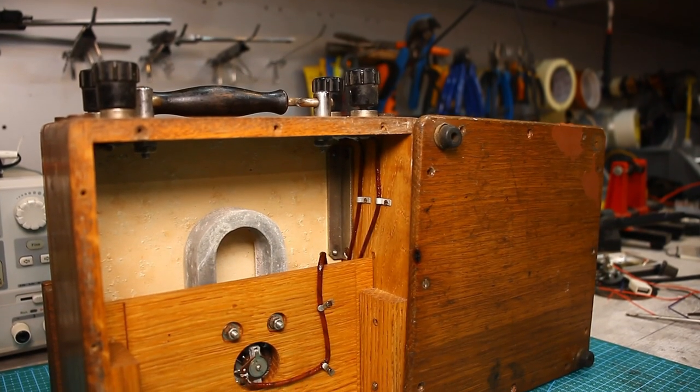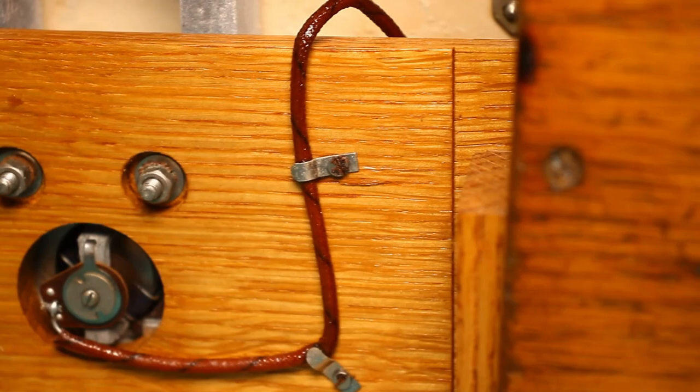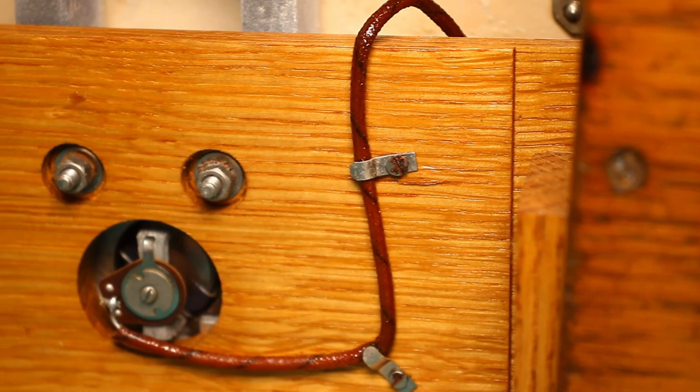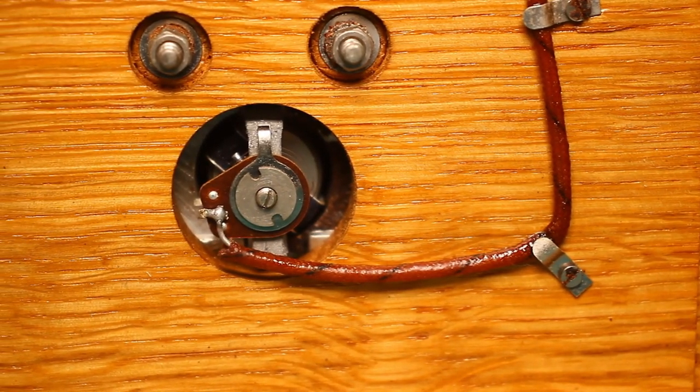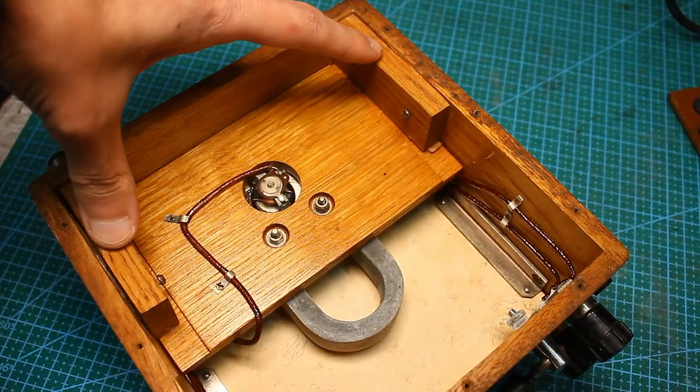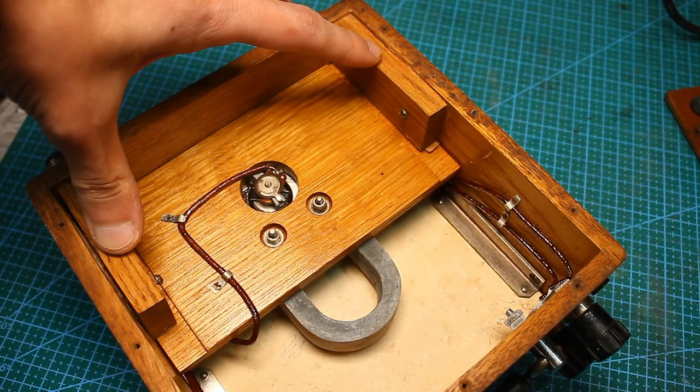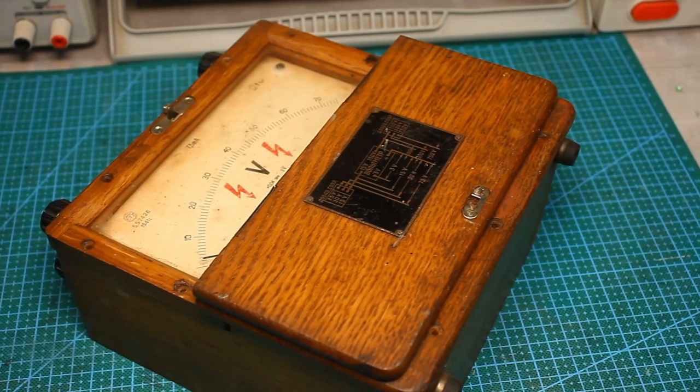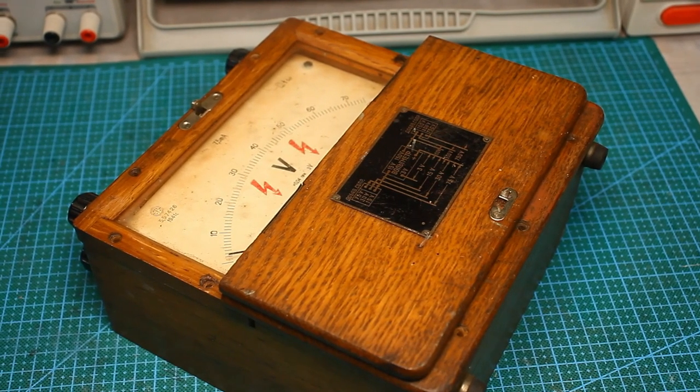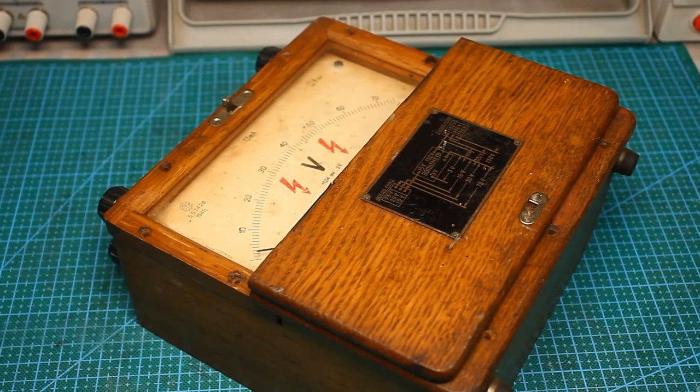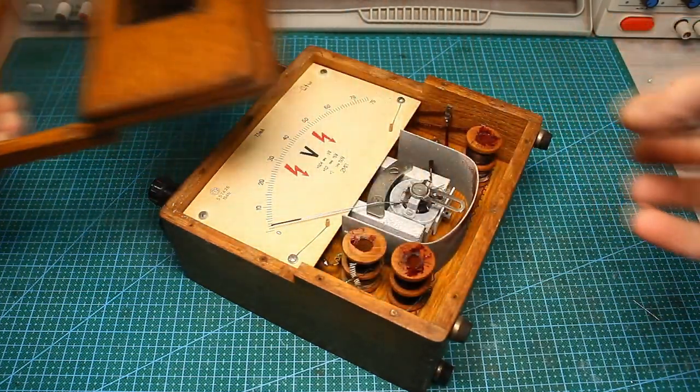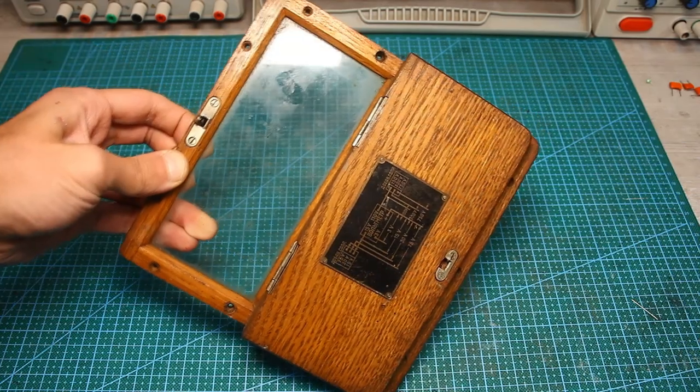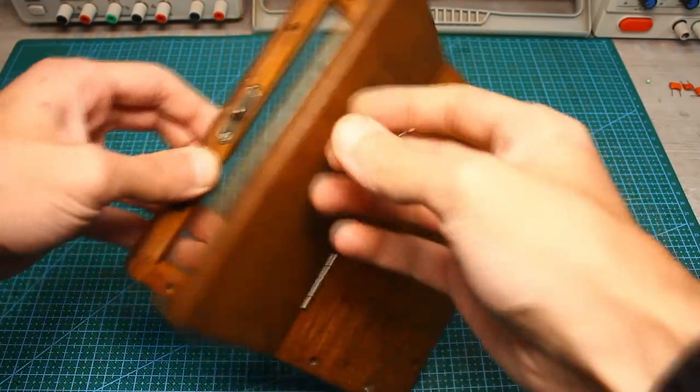Unfortunately, not much was possible to clean. This is the result of unfavorable storage conditions. In the hope that I will get to the magnetic system, I unscrewed the side struts, but this didn't give me any result. It turns out that the voltmeter is disassembled from the front, not from the back. Having unscrewed the corresponding self-tapping screws, we ended up there, where a person's glance hadn't been for as long as 80 years.